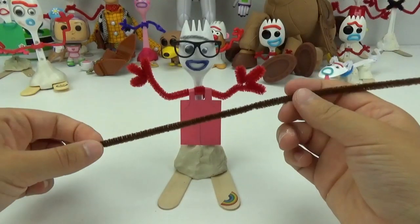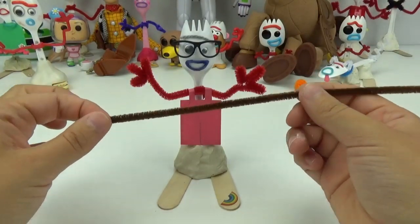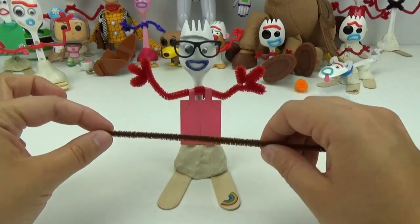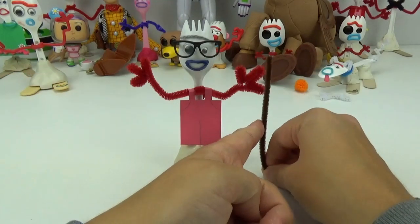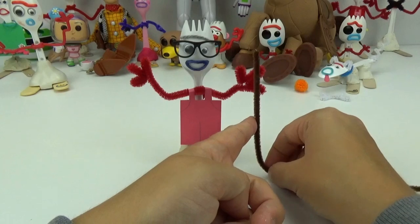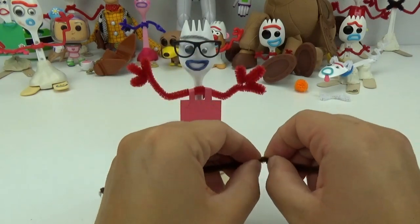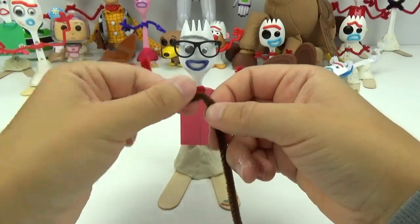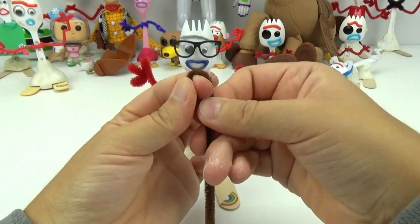Our last step for Grandpa Forky is going to be a cane. So, we are going to use this brown pipe cleaner and form him a cane for his hands. I want to measure out the size of it and cut off the extra, and twist over the top to look like a cane.